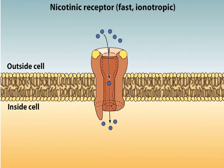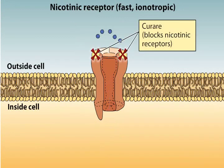The drug curare, once used as an arrow poison by South American Indians, blocks nicotinic ACH receptors. Because the synapses between nerves and skeletal muscles are nicotinic, curare paralyzes all skeletal muscles, including those used in breathing.